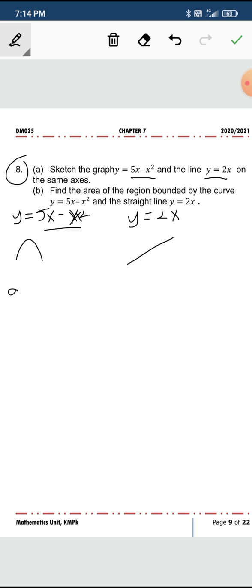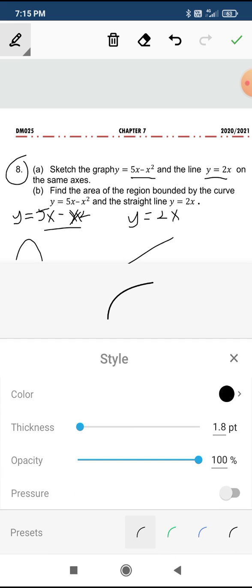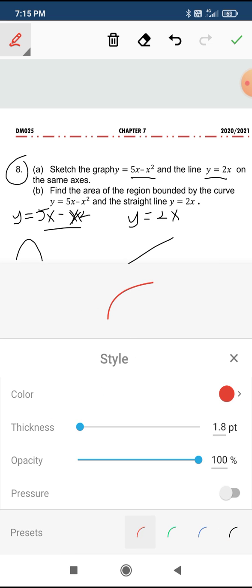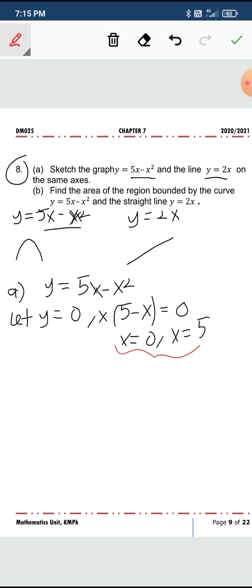First, let's look at this. Y equals 5x minus x squared, and when you let y equals 0, you factorize. You have what we call the x-intercepts. This is the x-intercept.